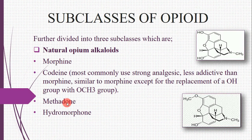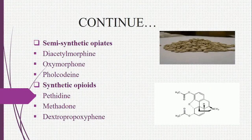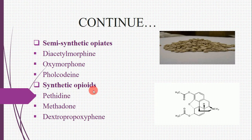The second subclass is semi-synthetic opiates, which include diacetylmorphine, oxymorphone, and related compounds. The third subclass is synthetic opiates, which include pethidine, methadone, and dextropropoxyphene.